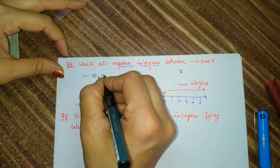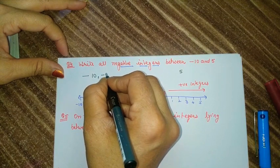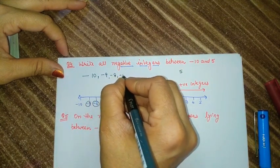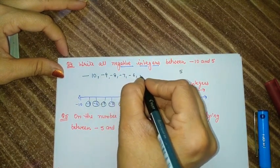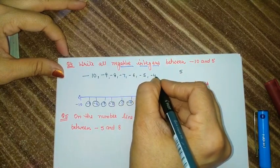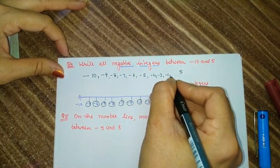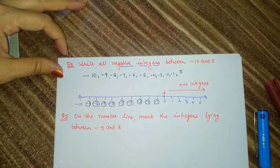These 9 negative integers are minus 9, minus 8, minus 7, minus 6, minus 5, minus 4, minus 3, minus 2, and minus 1.